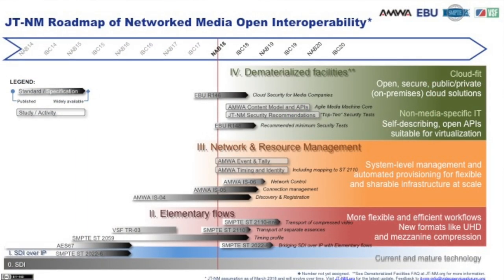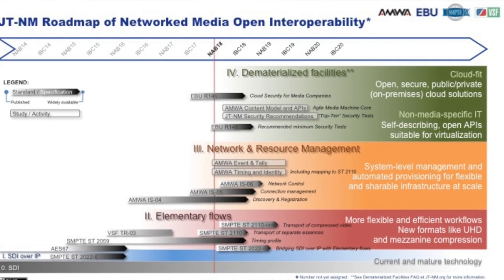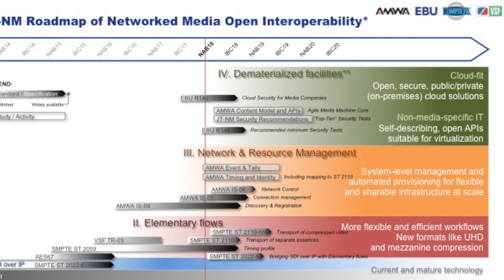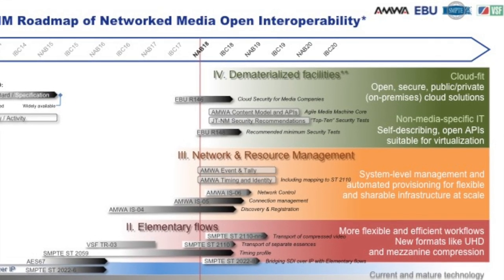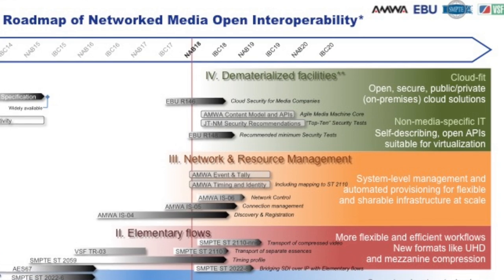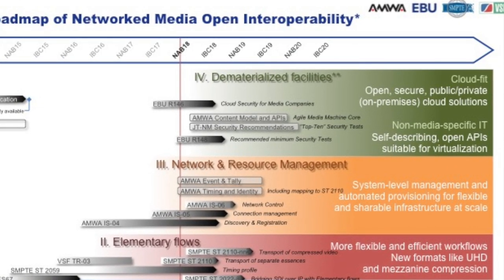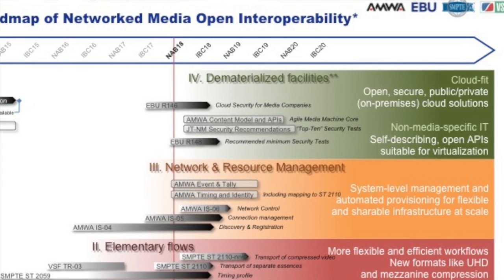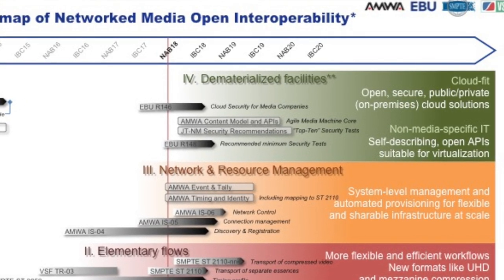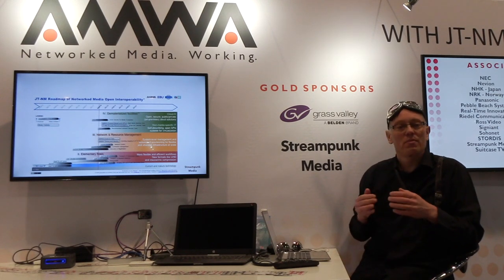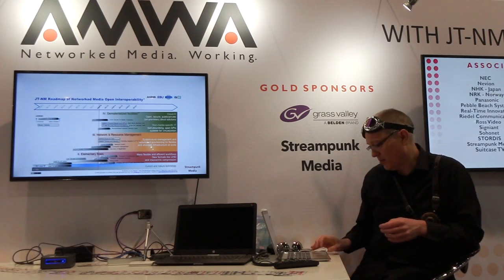Starting at the bottom we start with SDI, moving from SDI to elementary streams, moving elementary streams over the network and being able to understand the different devices and interconnectivity on that network using the network media open specifications ISO4, ISO5 and coming up soon ISO6. But the topic of this presentation is the top of this diagram — the dematerialized facilities — where we move to entirely cloud-fit working and also using non-media-specific information technology wherever possible.